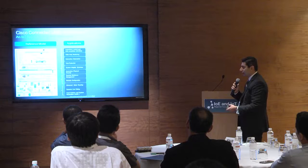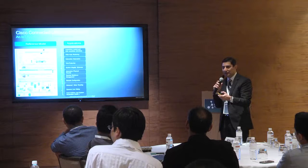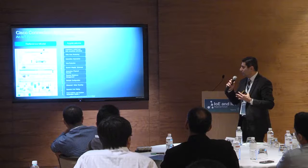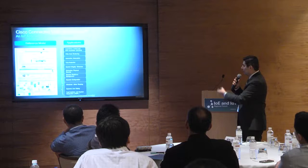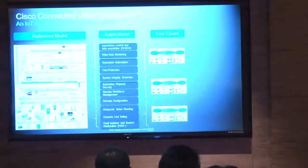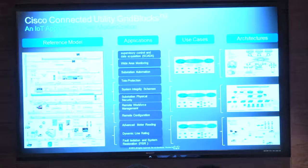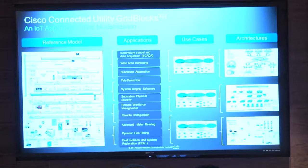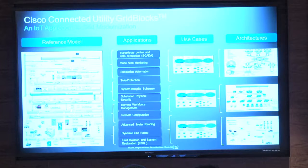Just to give you an example of our grid block — the connected utility approach — we have a reference architectural model. It's a reference, so it's probably 70% of what you'd think about as your future state. We work with you on the other 30% that is particular to your organization. Within it, you can run several applications based on that architecture, and those applications are tied to use cases. We step through how each goal you want to accomplish would be achieved and how it ties into the architecture.